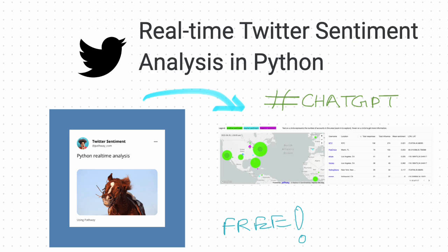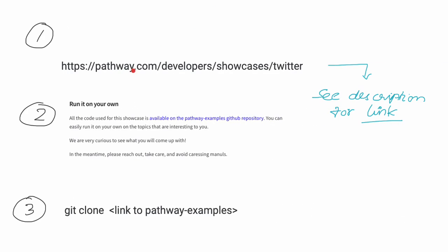I'll go through these steps one by one, and you should be able to run this on your local machine. I'm using a Mac, so there are some nuances, and I'll go through those as we go. Let's get started. Step one: go to that URL — pathway.com/developers/showcase/twitter. If you look at the description below, you should see the link to this URL.